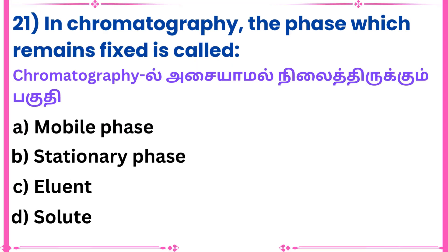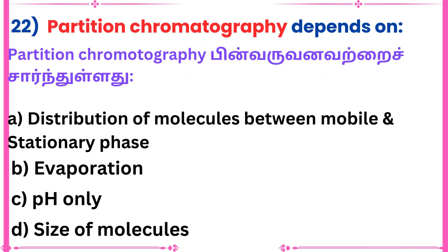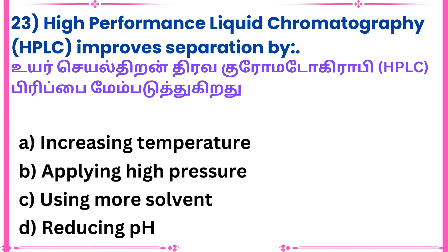Twenty-first question: In chromatography, the phase which remains fixed is called — Answer: Stationary phase. Twenty-second question: Partition chromatography depends on — Answer: Distribution of molecules between mobile and stationary phase. Twenty-third question: High performance liquid chromatography improves separation by — Answer: Applying high pressure.